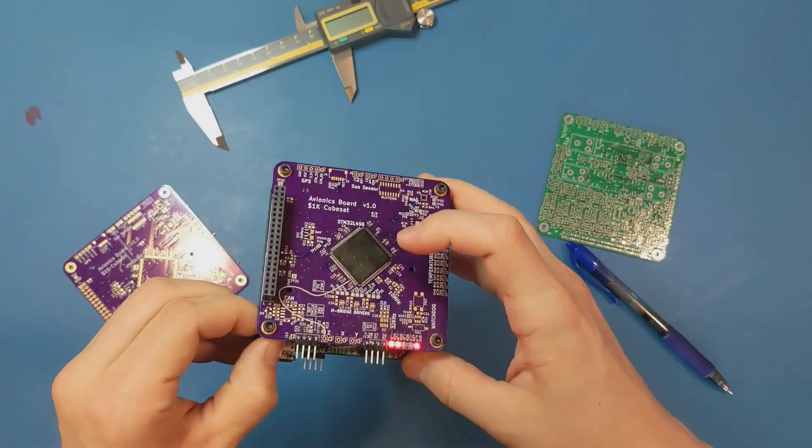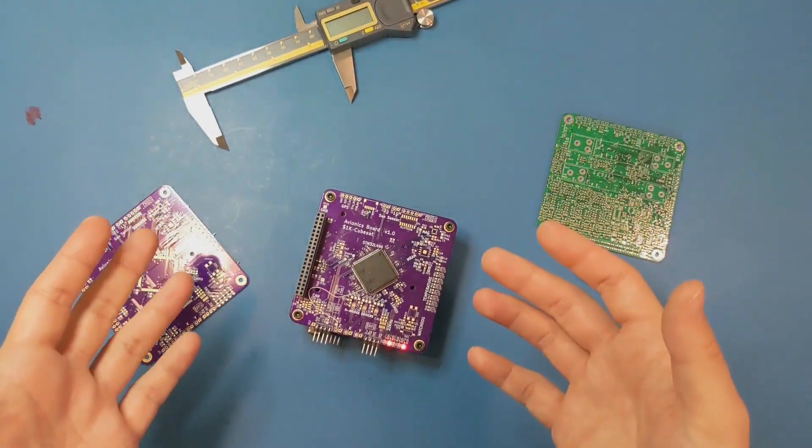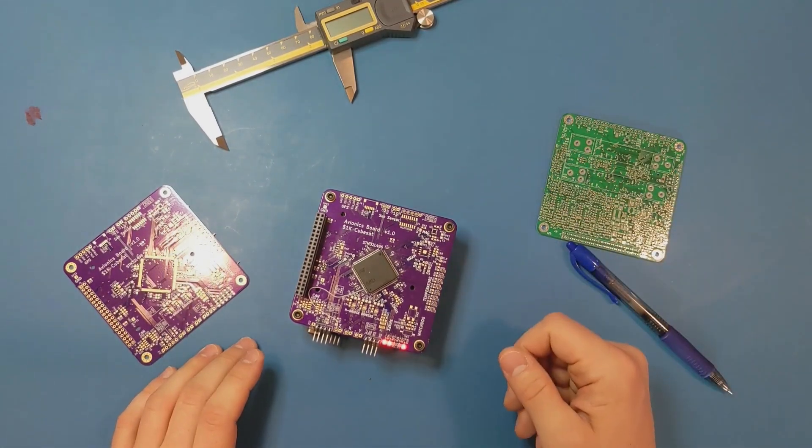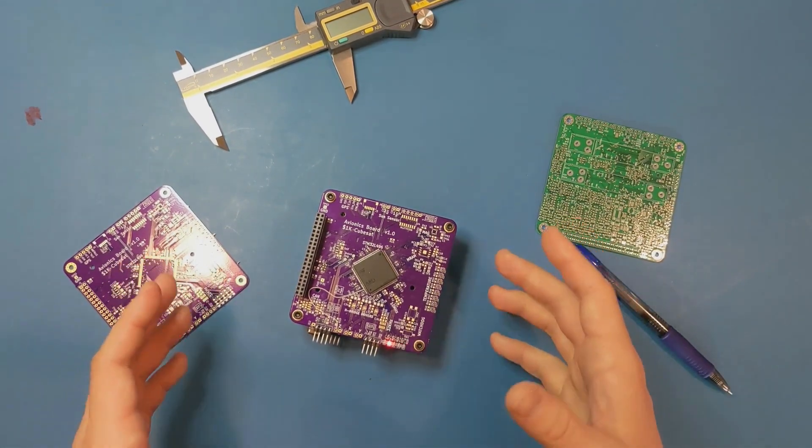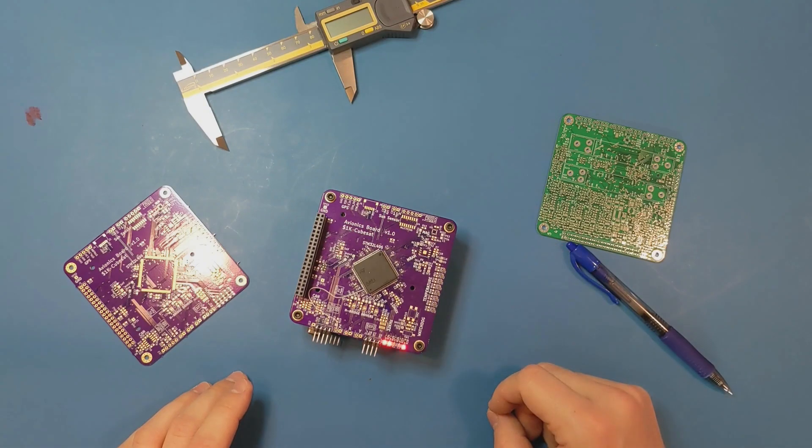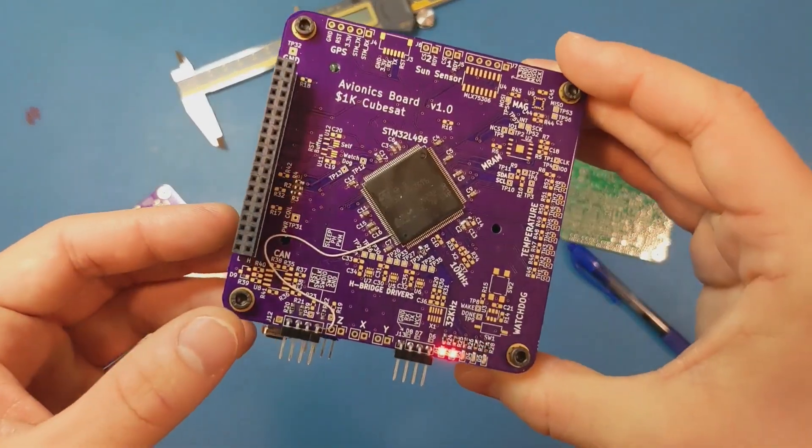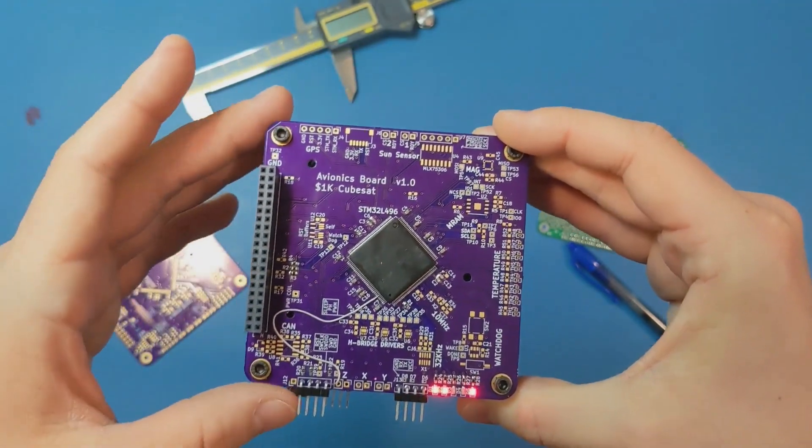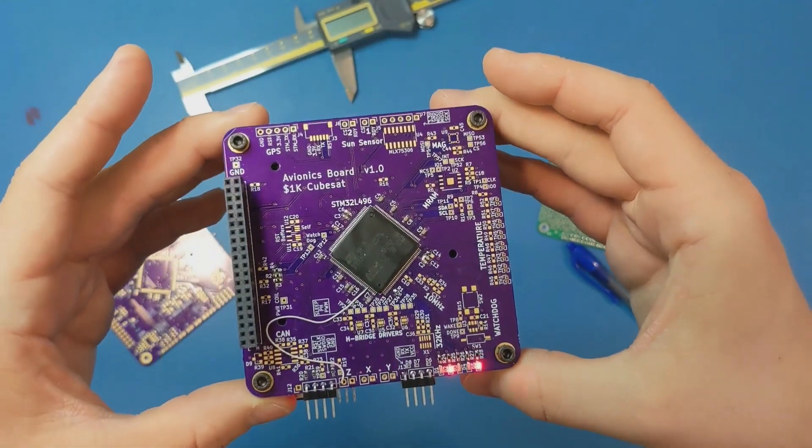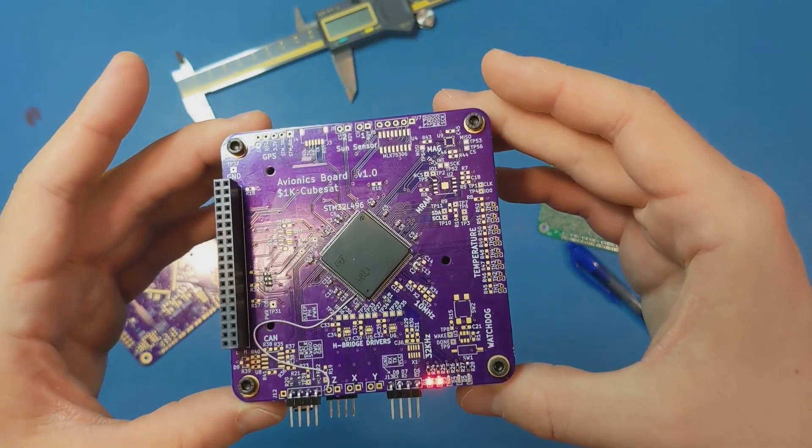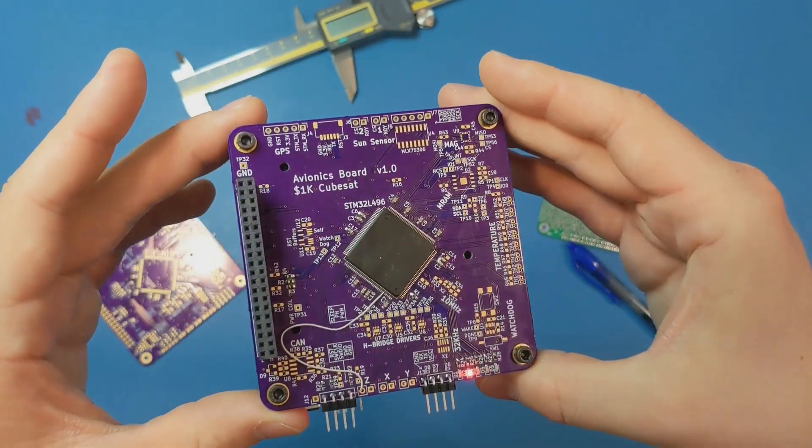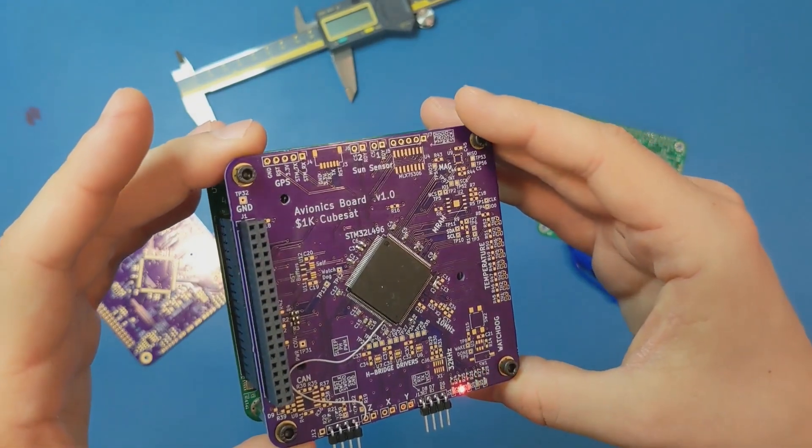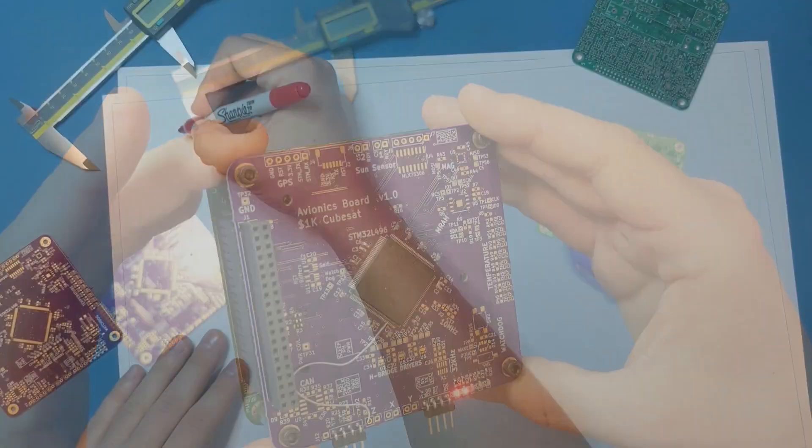But otherwise, the avionics software is pretty bare bones right now. I need to come up with a proper architecture for the avionics software, which I will likely cover in a future video, because it's a bit more complicated than what the EPS does. I also just need to populate this board. You'll see that pretty much everything is left open right now, and that's because hand soldering always takes longer than I think it will every single time. So I just need to actually do that, and then once I have those, I can work on the software for the avionics board.